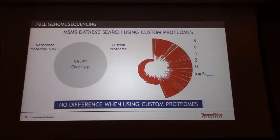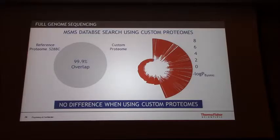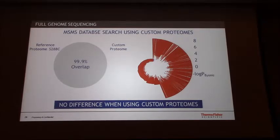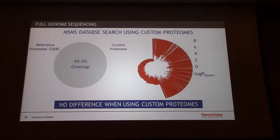We did the searches with custom proteomes and the reference proteomes, and got 99% overlap. We were not able to find new proteins and were not able to find new SNP-derived peptides. We did find slightly more identifications when using the custom proteomes — I think what happened is that because the database is smaller, the search space is smaller, and we get a little bit more relaxed FDR, meaning more identifications at a given FDR.